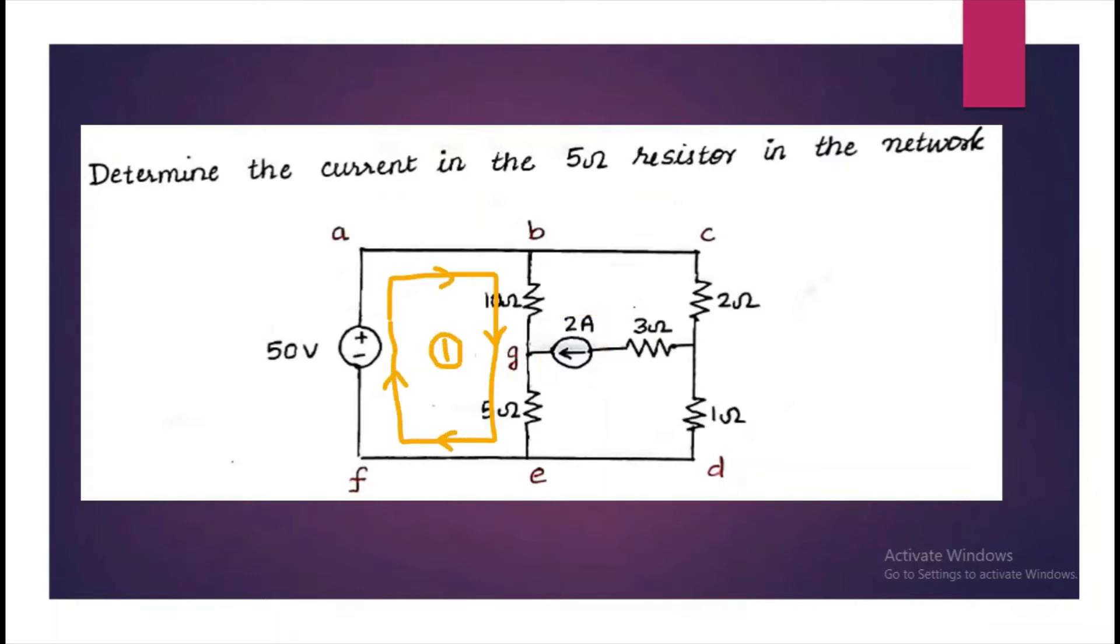We write equation for mesh 1, and then the outer loop equation for mesh 2 and 3, and then finally that of the current source. So, we have three equations to solve for three unknown variables.